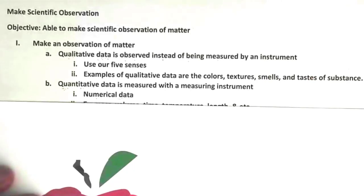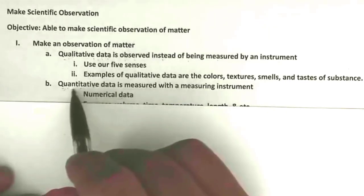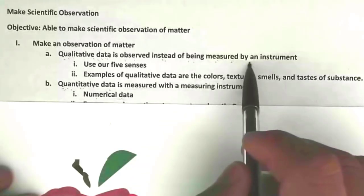When we make an observation of matter, we either collect qualitative data or quantitative data. Qualitative data is observed instead of being measured by an instrument.